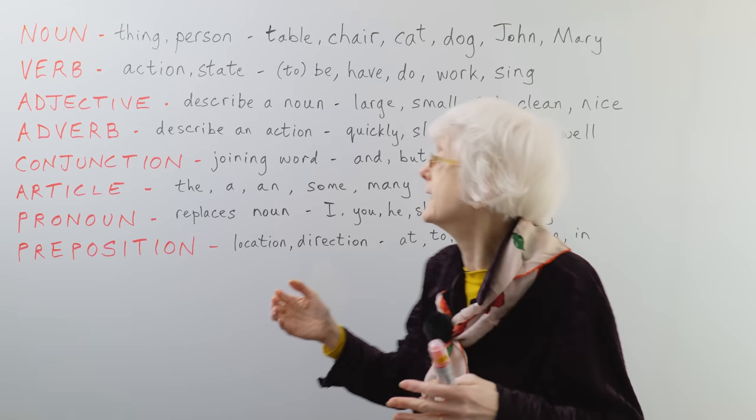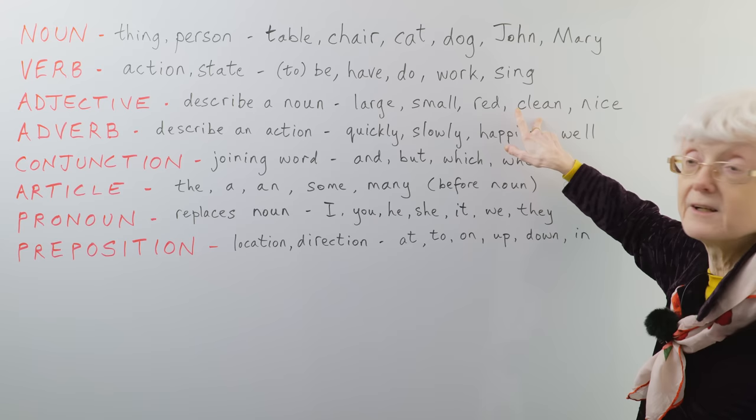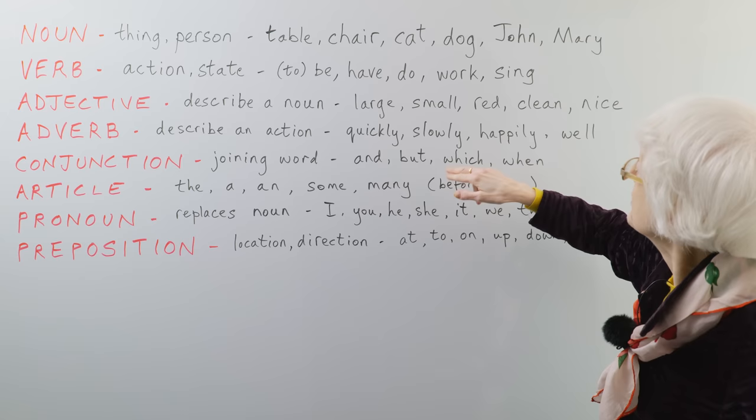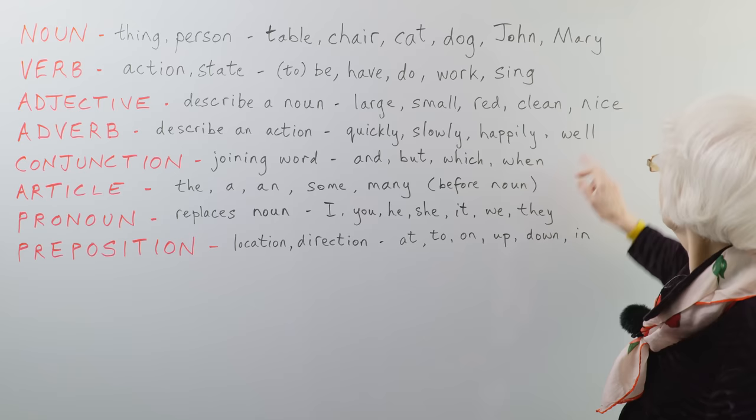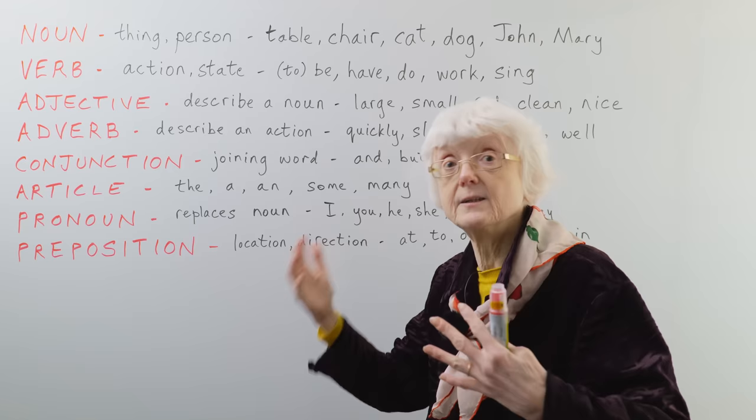Large, small, red. Any colors are adjectives. Clean, clean or dirty are adjectives. Nice, horrible. They're all adjectives describing something. A small cat, a red dog, a nice chair, a clean table. Obviously, all these parts of speech work together with other parts of speech in a certain order.